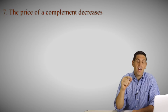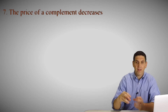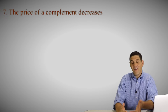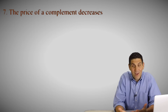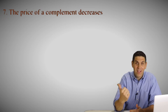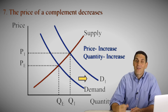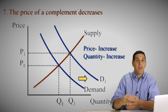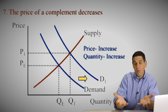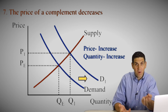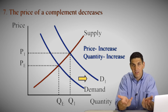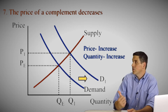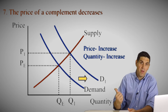Scenario seven: the price of a complementary product decreases — it's cheaper. There's some other product you would buy with fidget spinners. The answer is demand would increase, so price and quantity would go up. Why? Because if the thing you would buy with fidget spinners gets cheaper, you'd buy more of it, and then you'd buy more fidget spinners as well because these two things go together. So the demand increases for fidget spinners.